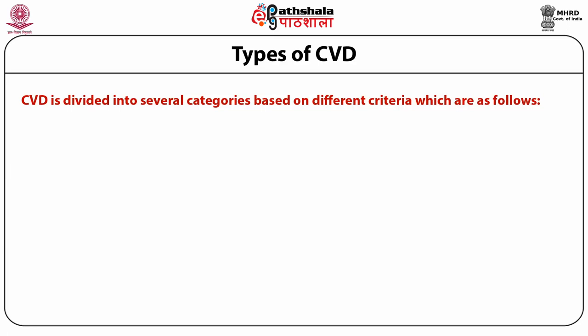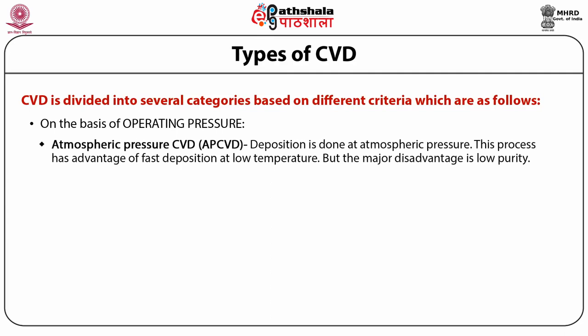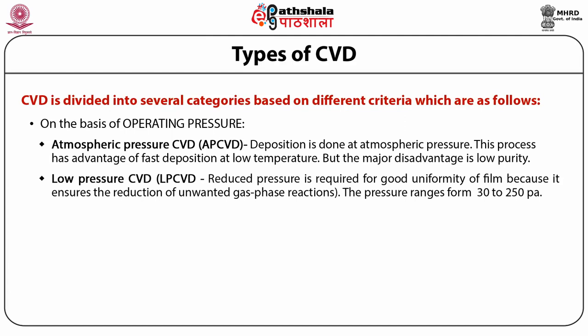CVD is divided into several categories. On the basis of operating pressure: atmospheric pressure CVD (APCVD) performs deposition at atmospheric pressure, with an advantage of fast deposition at low temperature, but the major disadvantage is low purity. Low pressure CVD (LPCVD) requires reduced pressure for good uniformity of film, as it ensures reduction of unwanted gas phase reactions. The pressure ranges from 30 to 250 Pascal.